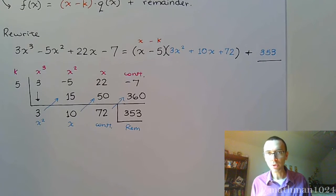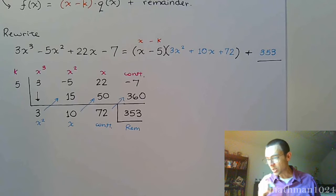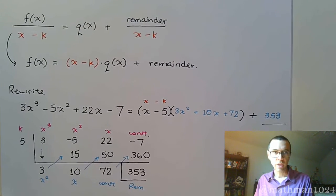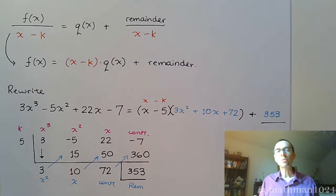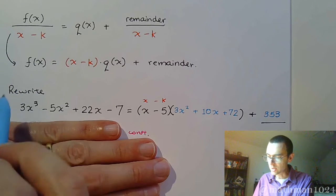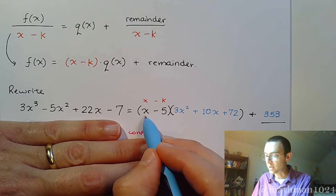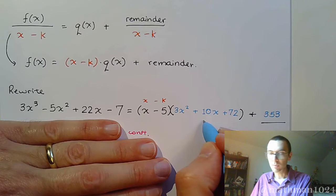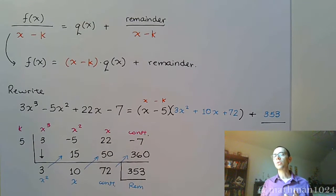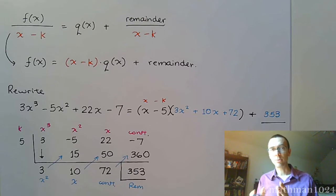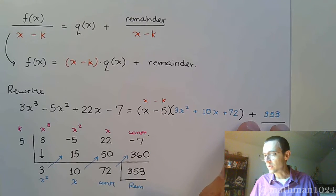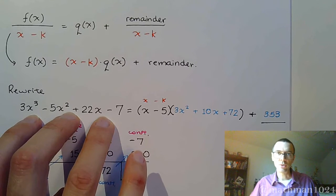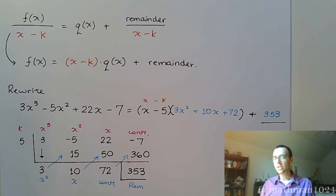We did synthetic division, but we need to understand what the problem is looking for. It wasn't asking us to divide; it was asking us to rewrite. What we saw in the last videos is that division gives us the quotient and remainder over the divisor. This problem asks us to rewrite the polynomial as the product of the divisor times the quotient plus the remainder term — the same work you'd do when checking long division or converting from an improper fraction. If you multiply these out and add back in 353, you come right back to the original polynomial.